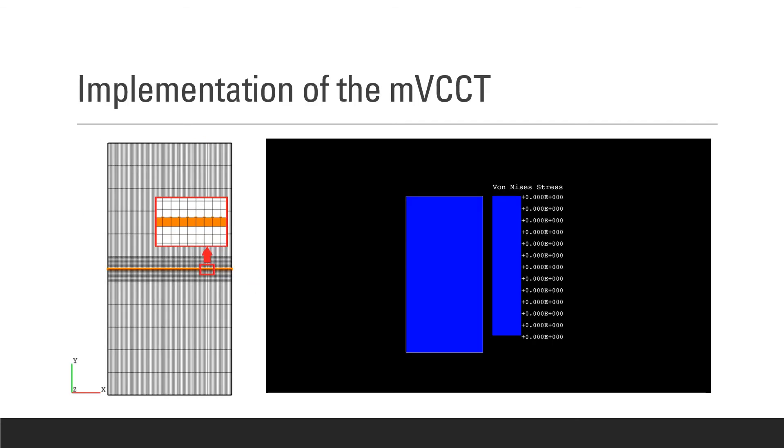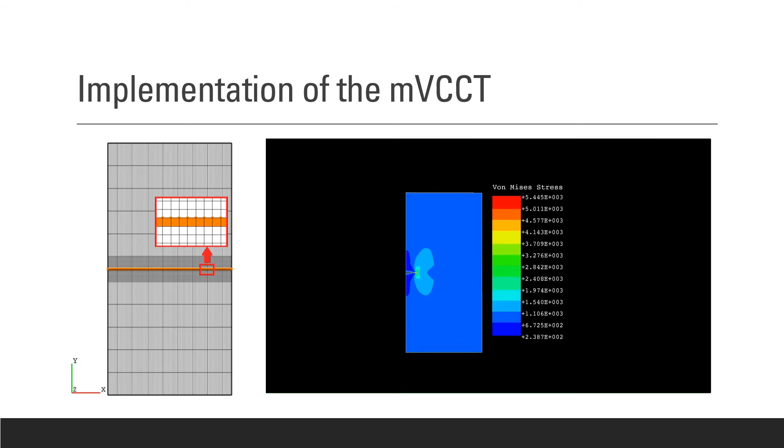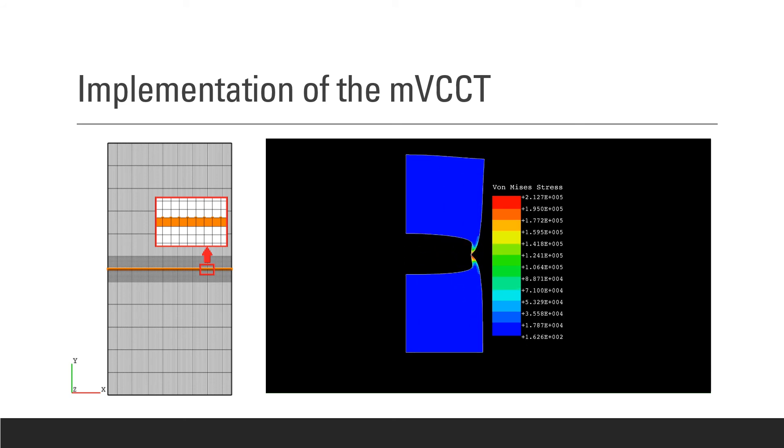So to determine the stress intensity factor using the modified virtual crack closure technique in the presented software Omicron, the user simply needs to define the path on which the crack is allowed to vary in its length. You can see here on the video that the software is varying the length of the crack and it's going to calculate K, the stress intensity factor, based on the crack's length. So the crack here is not propagating, its length is just being varied.